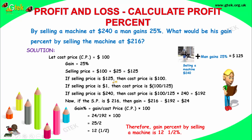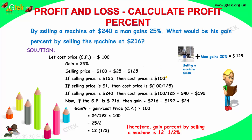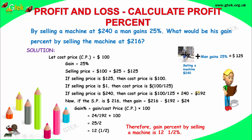If the selling price is $125, the cost price is $100. And if the selling price is $240, the cost price is how much? The selling price is $125 and the cost price is $100. If selling price is $1, cost price is 100 divided by 125. If selling price is $240, cost price is 100 divided by 125 multiplied by 240, which gives $192.